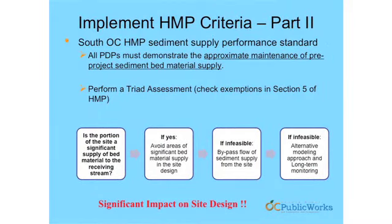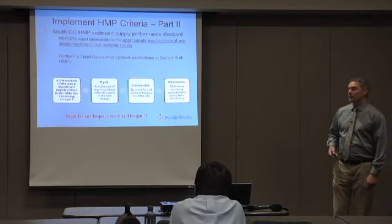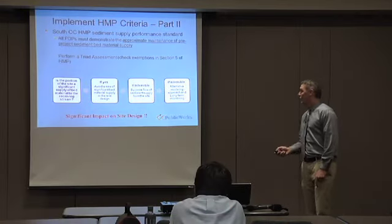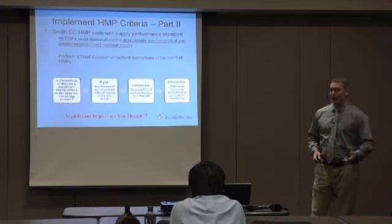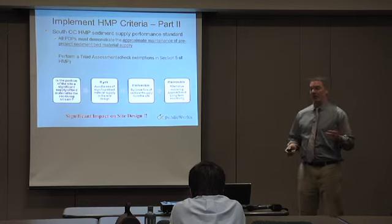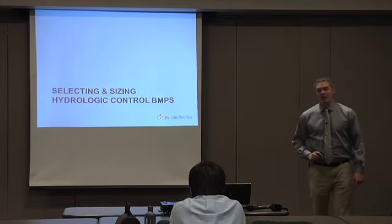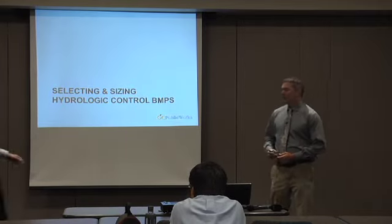The next step is the sediment analysis. Going through the triad approach, you're evaluating whether your site is a source of bed sediment material within your downstream receiving water. If so, you're avoiding those areas on-site — looking at first and second order streams and developing your site around those streams. If that's infeasible, there's an opportunity to bypass that by recreating a sediment supply bypass or recreating streams on-site, though that gets very hard to do. If you can't do that, there is a way to go through an alternative modeling approach and identify that your site is not a source of sediment. With that, I'm going to turn it over to Remy, who's going to go through the details of the model and the triad approach.